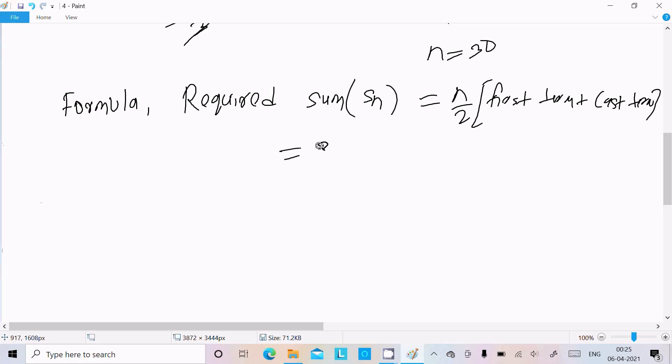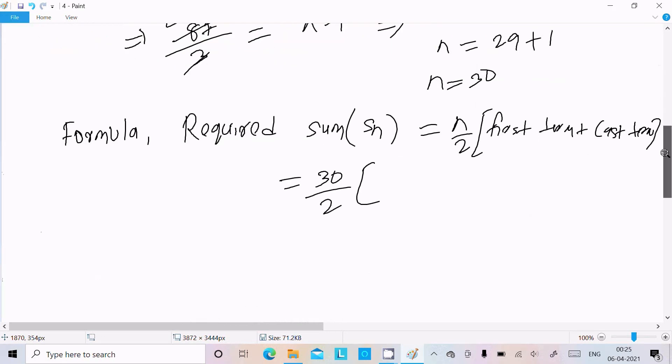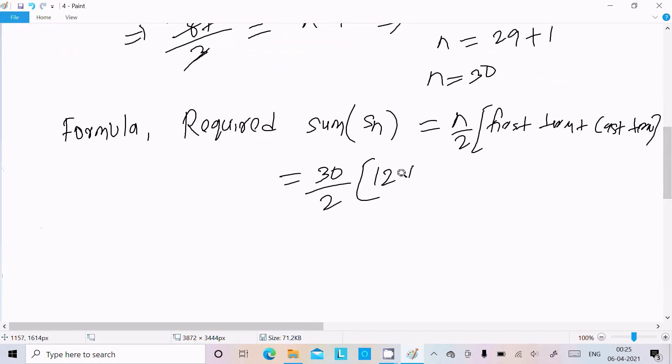So n value calculated, 30 by 2. Now here first term is 12 and the last term is 99. So we can write here 12 plus 99. Cancel by 15.